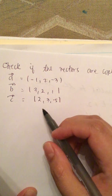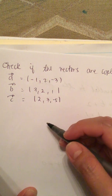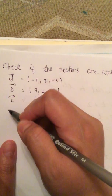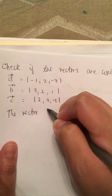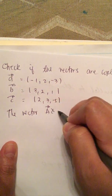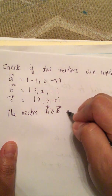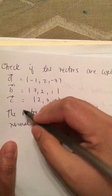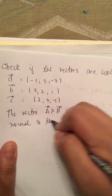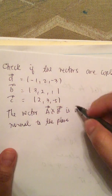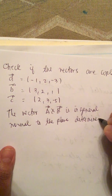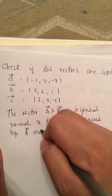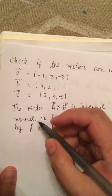The vector A cross B is in general normal to the plane determined by vectors A and B.